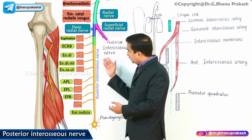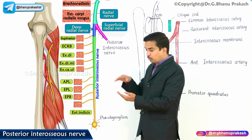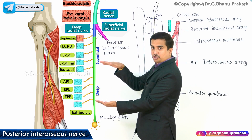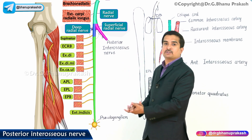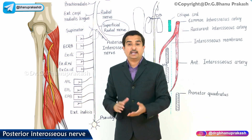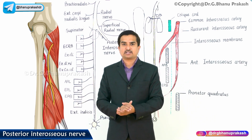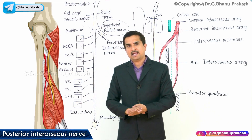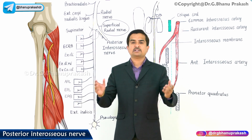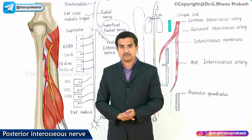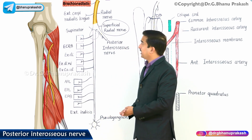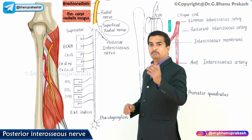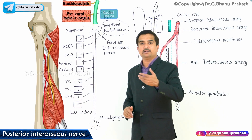Once it enters the posterior compartment of the forearm, it runs in a fascial plane between the superficial and deep extensor muscles, finally reaching the interosseous membrane where it gives innervation to almost all muscles of the radial and dorsal aspect of the forearm. However, not all muscles are innervated by the posterior interosseous nerve — for example, muscles like brachioradialis and extensor carpi radialis longus are innervated by direct branches from the radial nerve trunk itself.